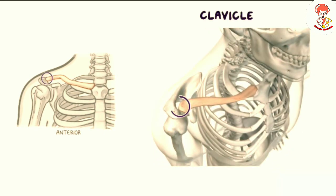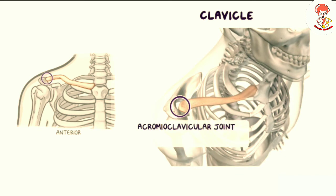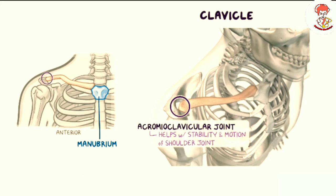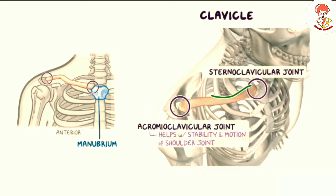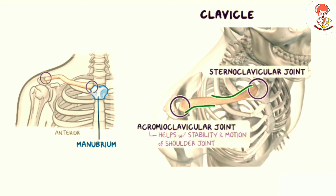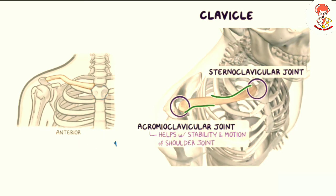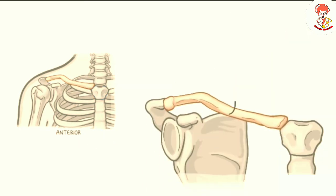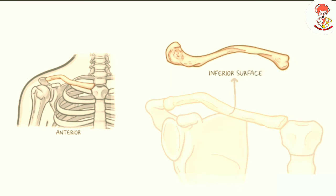Now, the tip of the acromion articulates with the lateral end of the S-shaped bone called the clavicle, forming the acromioclavicular joint, which helps with stability and motion of the shoulder joint. The medial end of the clavicle is enlarged and triangular shaped, and articulates with the manubrium, which is the upper part of the sternum, to form the sternoclavicular joint. The medial two-thirds of the clavicle are convex anteriorly and the lateral third is flattened and concave anteriorly.